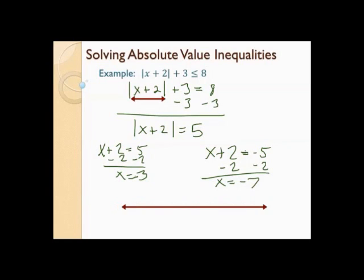Now I want to put the solutions on a number line. Here's negative 7 and here's positive 3, and I'll put 0 on there as a frame of reference. I'm going to use closed circles because there's an equal sign under the inequality. I want to pick a number between the two points — I don't want to pick negative 7 or 3. Any number between them works: 0, 1, negative 6. Let's try 0.